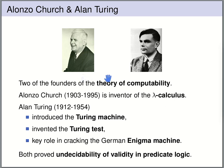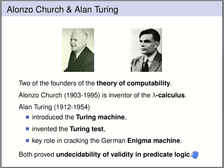Alonzo Church and Alan Turing stand at the cradle of the theory of computation. Church invented the lambda calculus, a Turing-complete computational model that works in a completely different way. Turing is known not only for Turing machines but also for suggesting the Turing test to determine machine intelligence, and for his key role in cracking the German Enigma machine in World War II. Both Church and Turing independently proved that validity in predicate logic is undecidable.